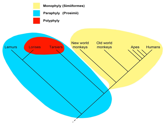The term monophyle, or monophyletic, derives from the two ancient Greek words monos, meaning 'single,' and phylon, meaning 'tribe' or 'race,' and refers to the fact that a monophyletic group includes organisms consisting of all the descendants of a unique common ancestor.